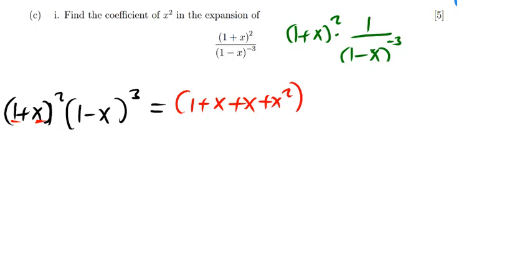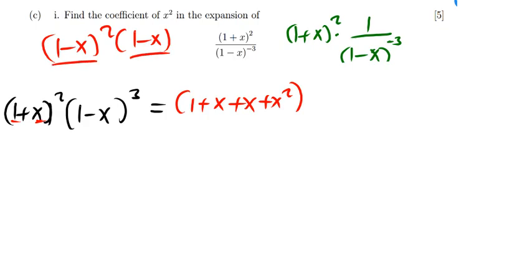Now, how do we expand 1 minus x to the power 3? I'm going to expand this in two steps. I'll say 1 minus x all squared, times 1 minus x. Let me first expand 1 minus x squared: 1 times 1 is 1, then 1 times negative x gives negative x, then negative x times 1 gives negative x, then negative x times negative x gives positive x squared.